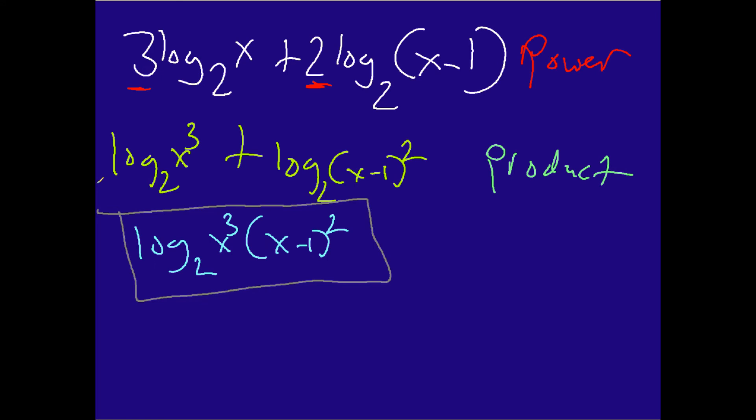In this particular example right here, we started with the power. In other words, we moved this coefficient that was out front in both of these, and we moved them to be powers like so, and that's consistent with the power property of logarithms. Once we had that, you can see we have this nice plus sign in the middle here with the same basis on both sides, which means that we can now use the product property, and that is how we were able to simplify our final expression.